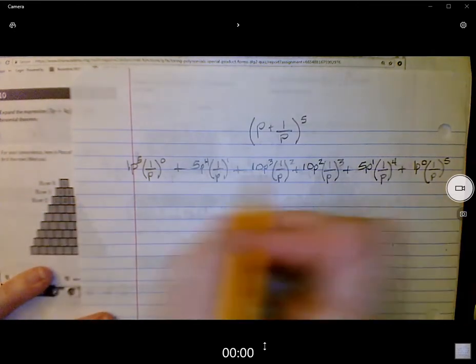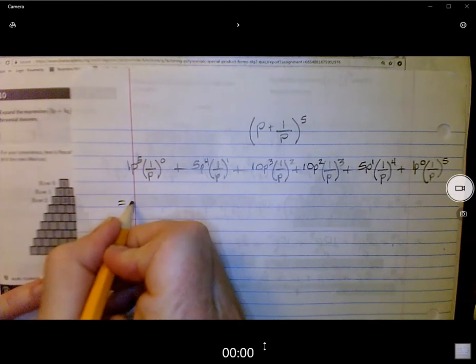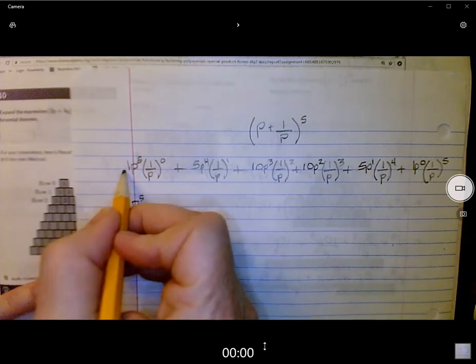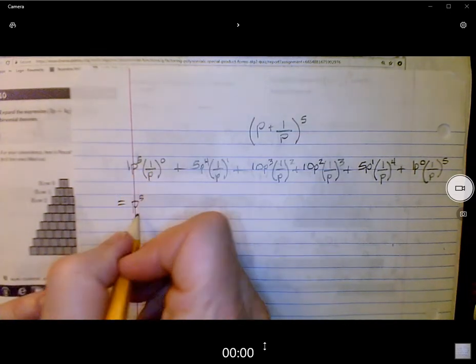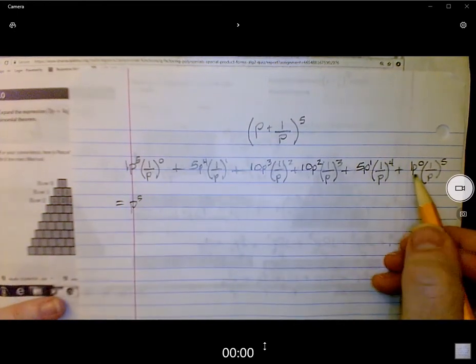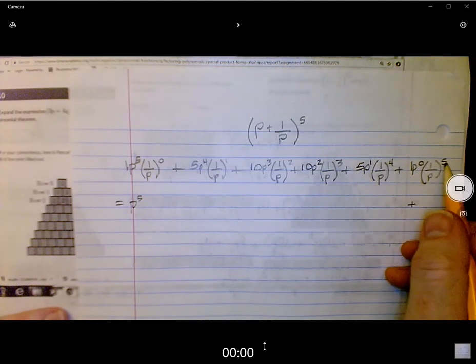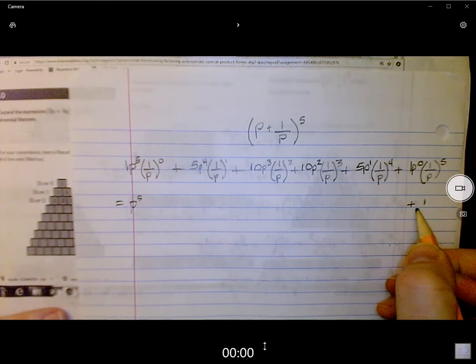All right. Let's start simplifying these terms. This first term is going to wind up being P to the fifth. Don't need that one, and this also is a one, so it's simply P to the fifth. This last term is also really easy to simplify, and we'll just get it simplified right now. It's just going to be 1 over P to the fifth.